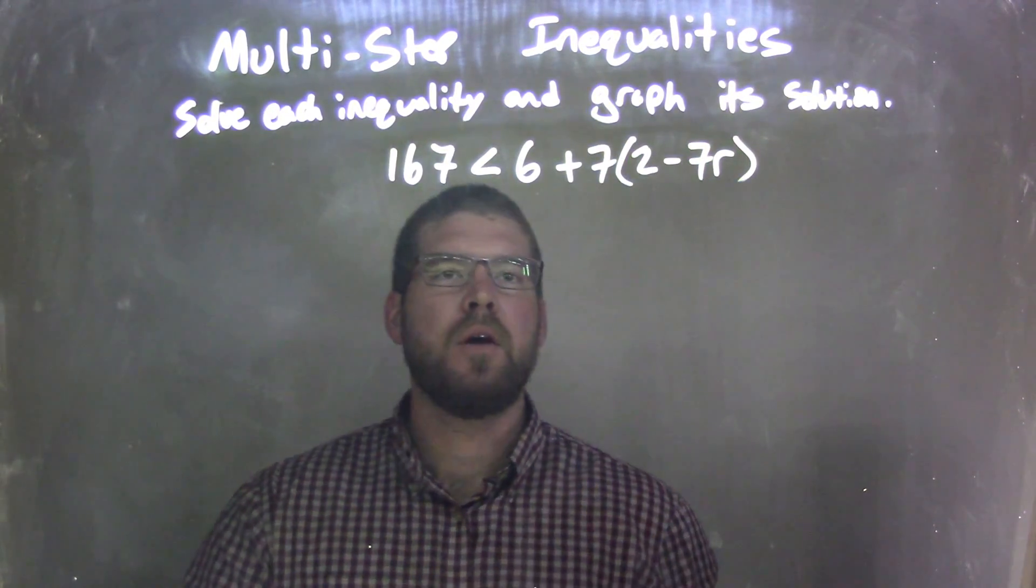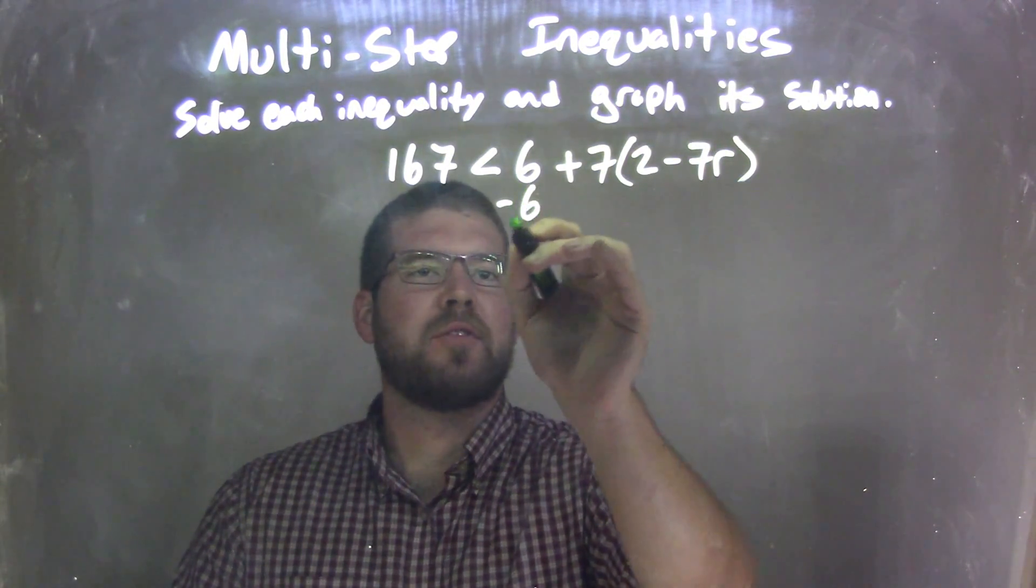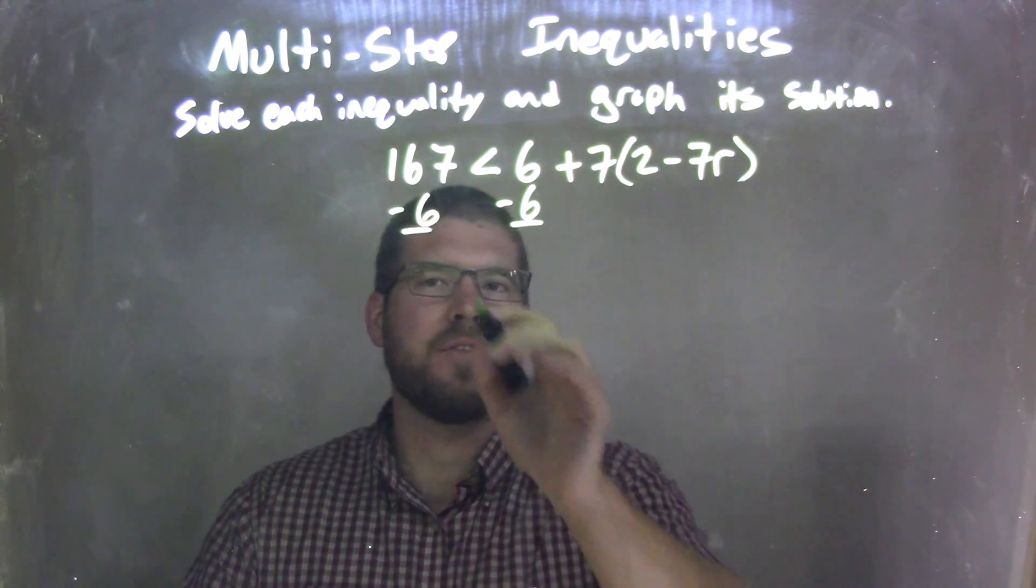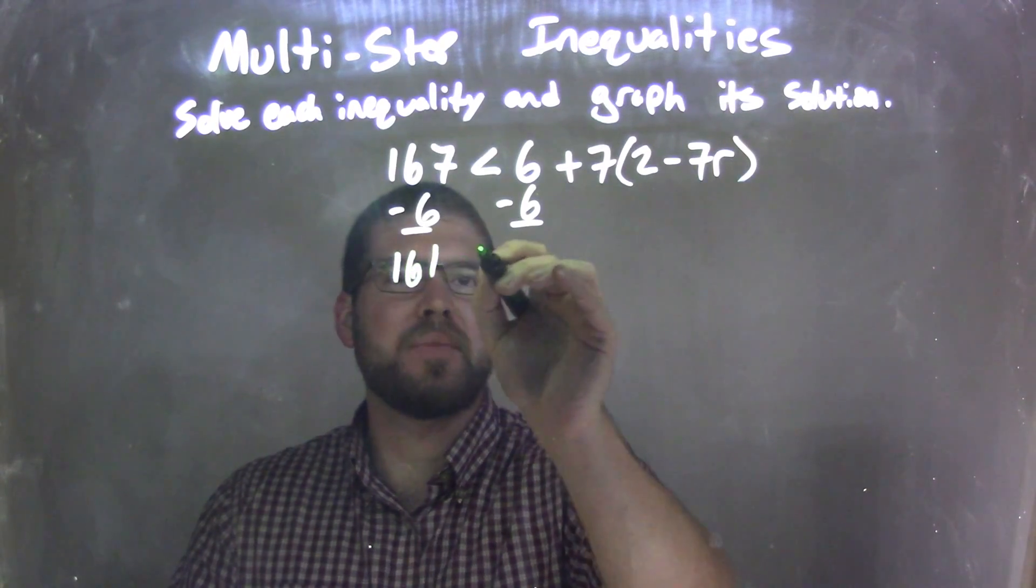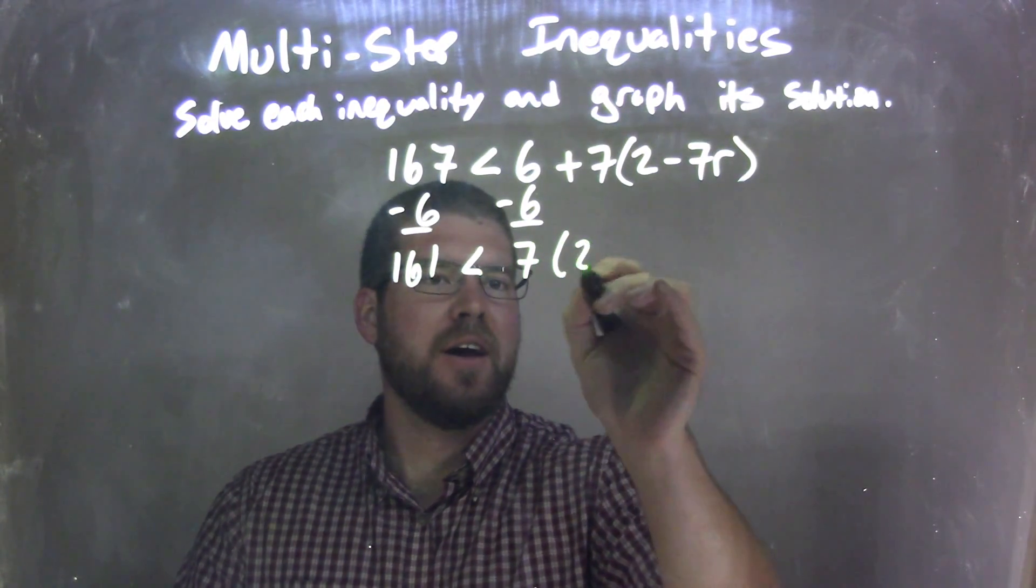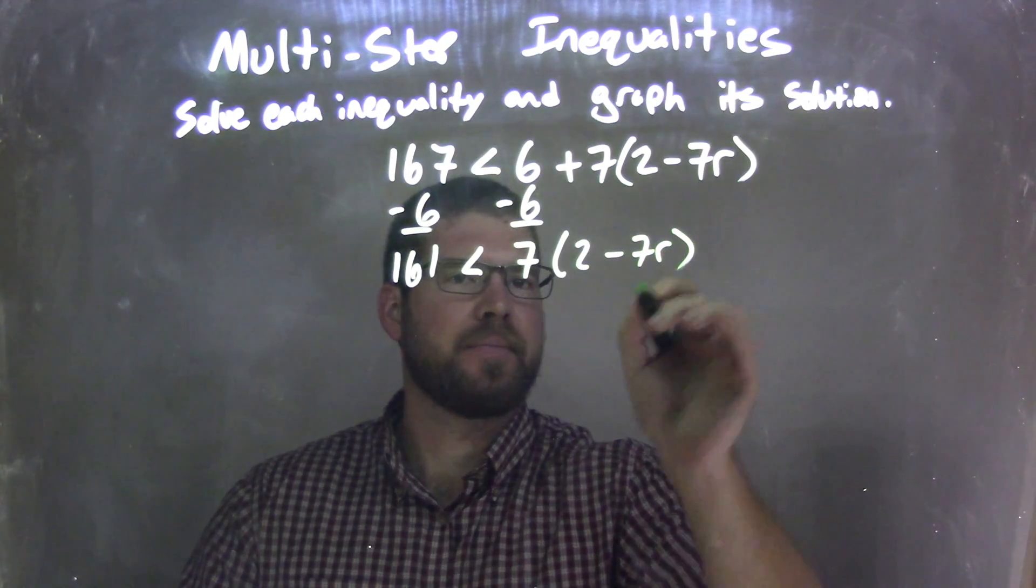I'm going to subtract 6 from both sides to try to bring things over. There's many ways to solve this problem. 167 minus 6 is 161, which is less than 7 times 2 minus 7r.